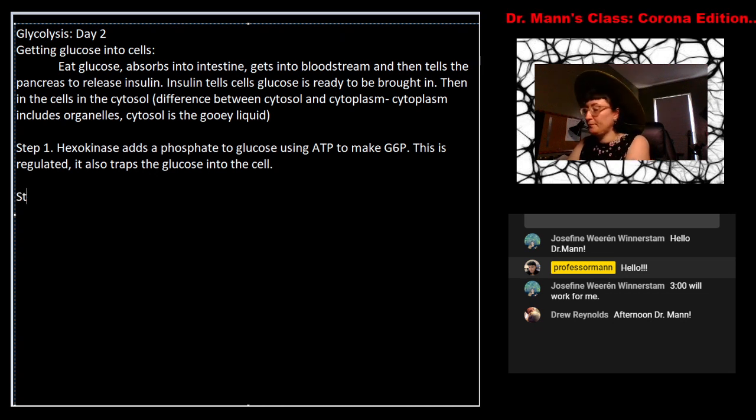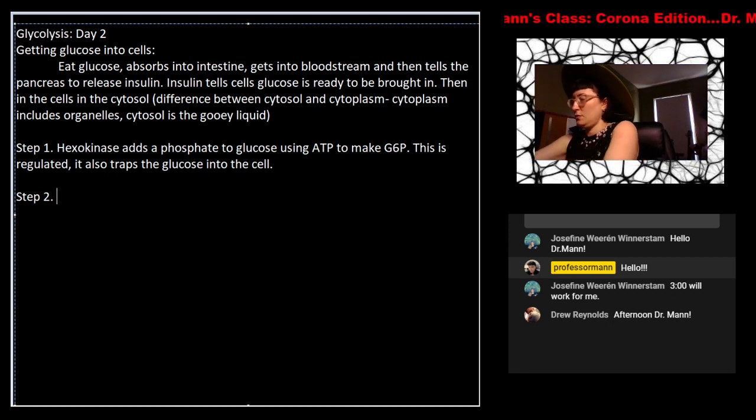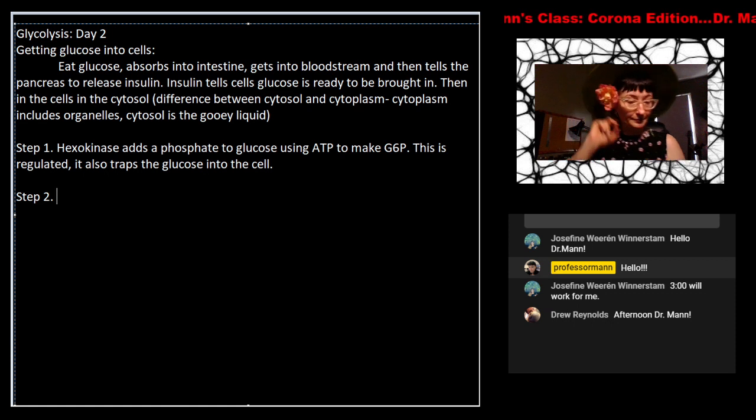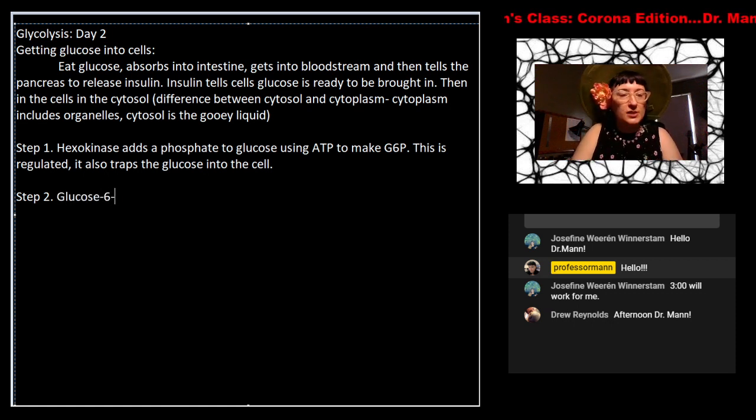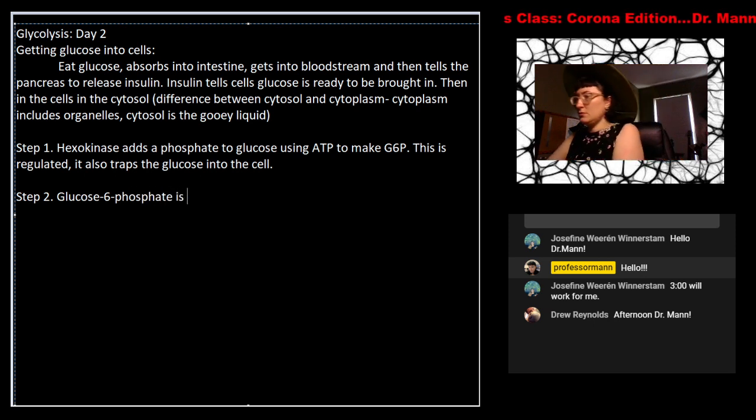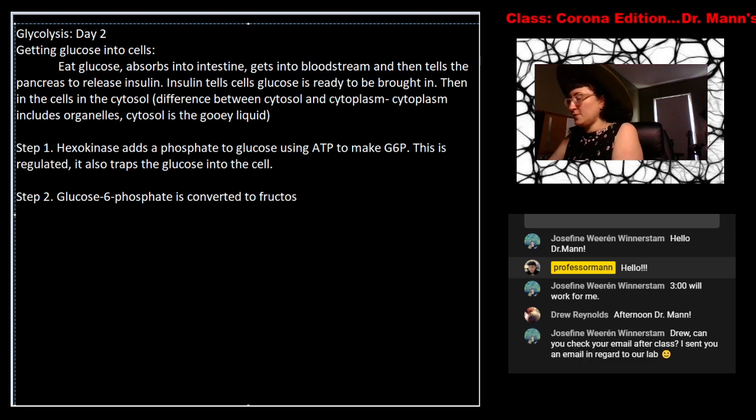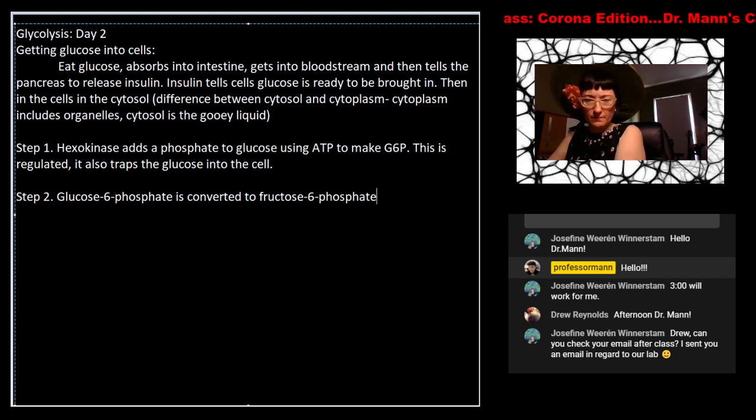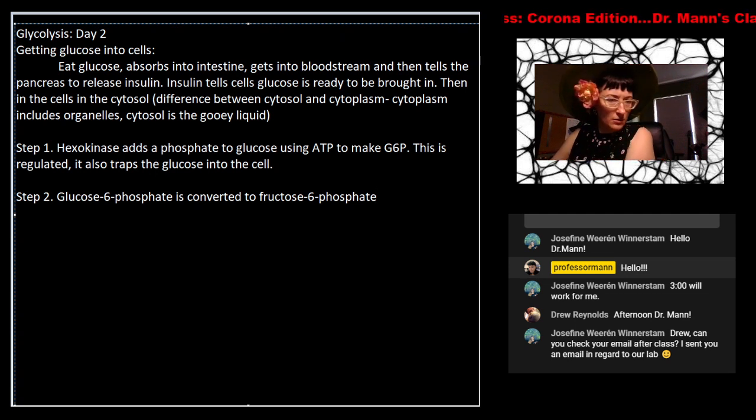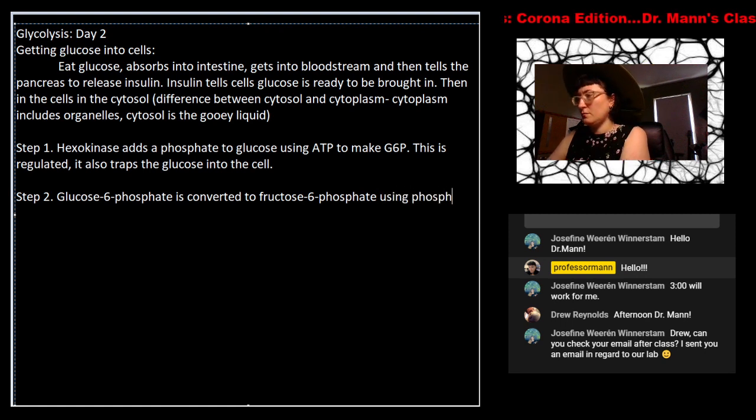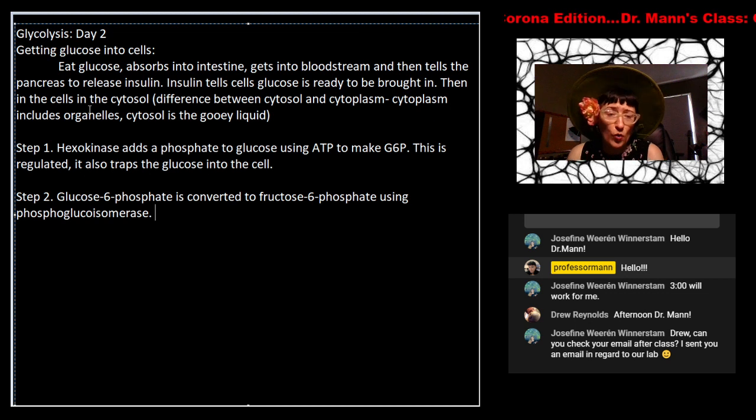So hexokinase adds a phosphate to glucose using ATP to make glucose 6-phosphate, which I'll just abbreviate that way. And so that was kind of where we left off. We talked about how this is an important step. This is regulated, which makes sense. And it also traps the glucose into the cell. So it's an irreversible reaction. So once you slap the phosphate on there, you don't unslap the phosphate on there. And so that's where we kind of left off with at the end of step one. So step two is what I will be focusing on today.